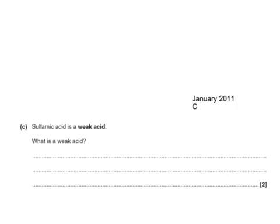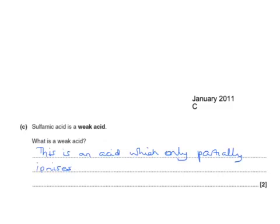Here's a past paper question: sulfamic acid is a weak acid — what's meant by a weak acid? A weak acid is one which only partially ionises and has a pH of about 3 or 4. It doesn't completely dissociate or completely ionise, and it forms an equilibrium mixture, certainly not a very low pH.